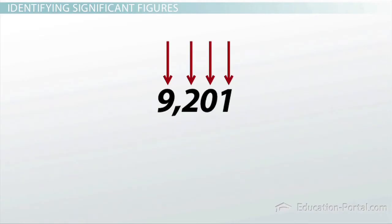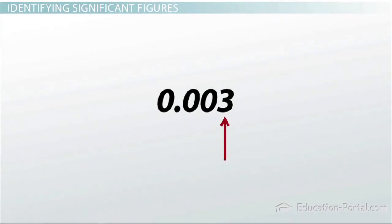Leading zeros are not significant, as in the number 0.003, which has one significant figure. These zeros just serve as placeholders. The same number could have easily been written as 3 times 10 to the negative third, without those leading zeros.